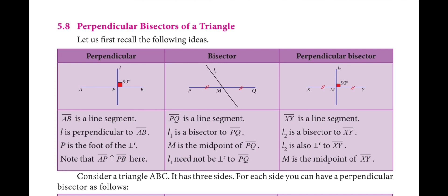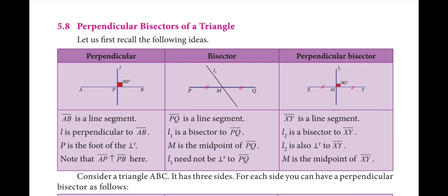Perpendicular bisector: a perpendicular line meets AB at 90 degrees, and a bisector cuts PQ at midpoint M. A perpendicular bisector cuts the line into two equal parts at exactly 90 degrees.